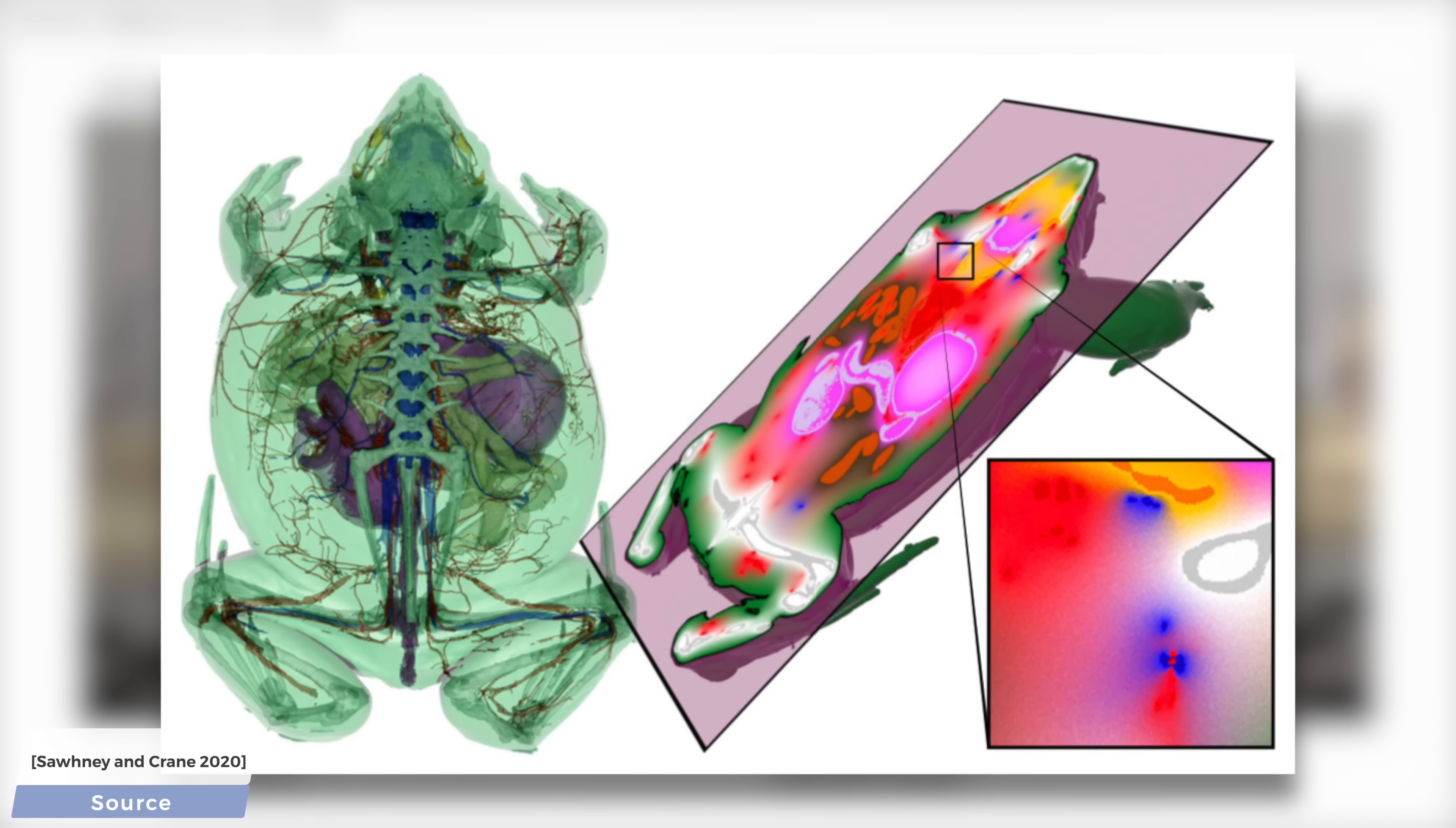For instance, two, it can also compute a CT scan of the infamous shovelnose frog that you see here, and instead of creating the full 3D solution, we only have to compute a 2D slice of it, which is much, much cheaper.